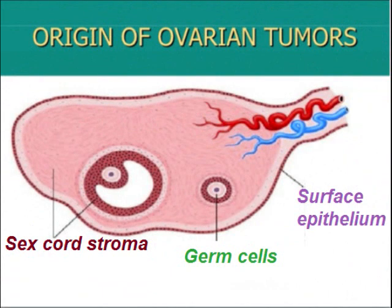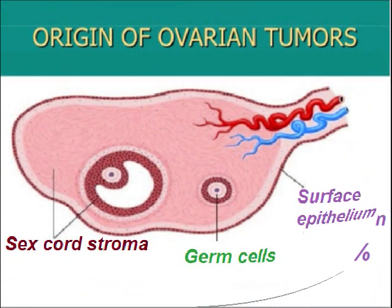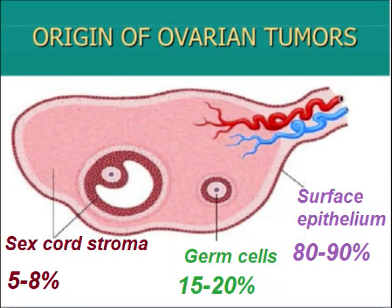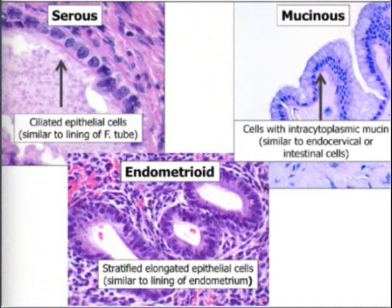Now, the origins of ovarian tumors: they are surface epithelial tumors, germ cell tumors, and sex cord stromal tumors. 5–8% arise from sex cord stroma, 15–20% from germ cells, and the majority are surface epithelial tumors. Among surface epithelial tumors, the majority are serous malignant tumors, then mucinous, and endometrioid — resembling endometrial glands.